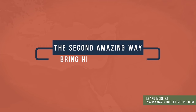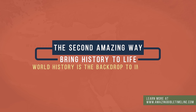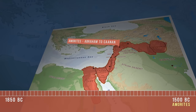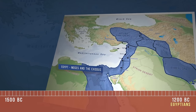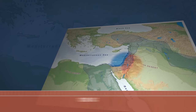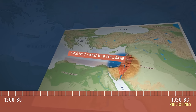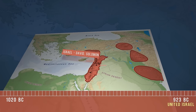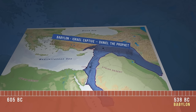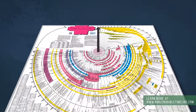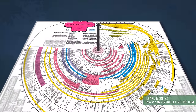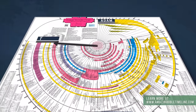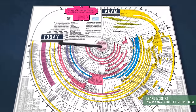The second amazing way to bring history to life: world history is the backdrop to important Bible people and events. The amazing Bible timeline with world history works like a clock. It starts with Adam, around to Christ at 6 o'clock, then around to today, counting down to midnight and the return of Christ, the bridegroom.